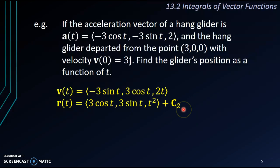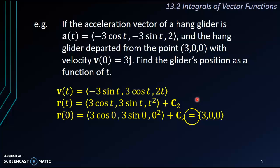So this is the second time a constant appears, a constant vector appears. So I'll just label it as C₂. And now we need to find out what is this C₂ in order to get the complete vector function for r(t). Now let's see. What is the information that we have here? It says the hang glider departed from the point (3,0,0).